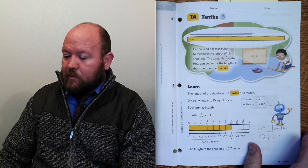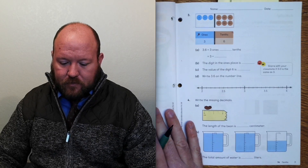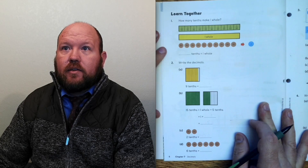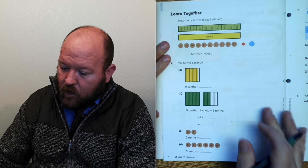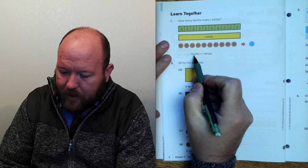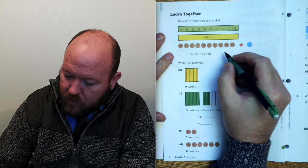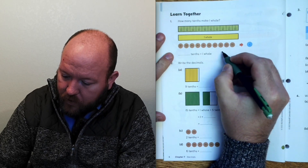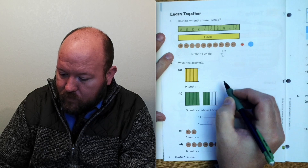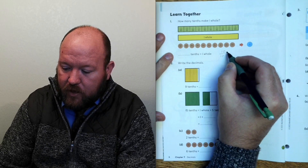Let's turn over to page 6. How many tenths are in a whole? We already know this — in order to have a whole, you need 10 tenths, because you need the number on the top and the bottom to be the same to equal one whole. So we need 10 tenths.